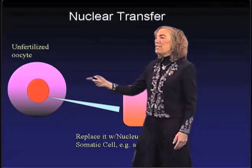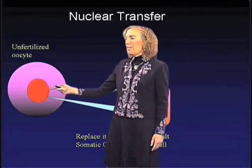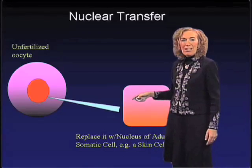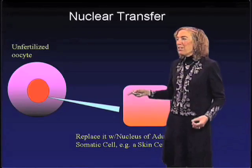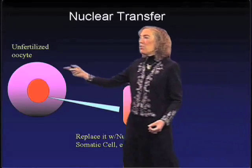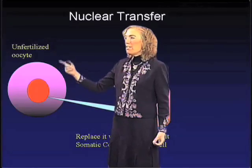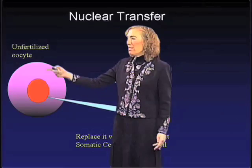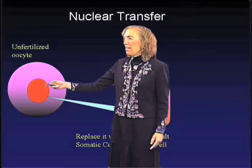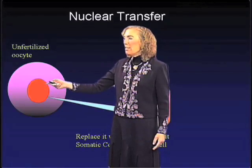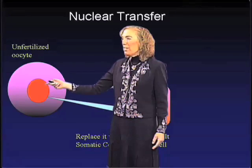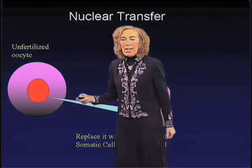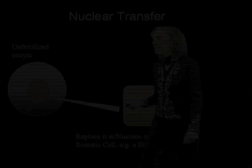This is a diploid nucleus because all of the somatic cells of your body are diploid. So even though this started out as an unfertilized oocyte with only genetic material from the female, what this cell now has is a diploid adult nucleus sitting in an oocyte cytoplasm.